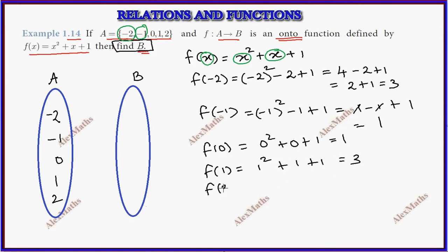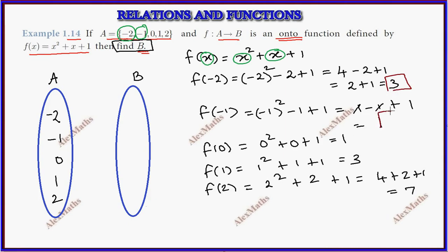The computed values give results including 1, 3, and 7. With repetition noted, the distinct elements of set B are 1, 3, and 7.